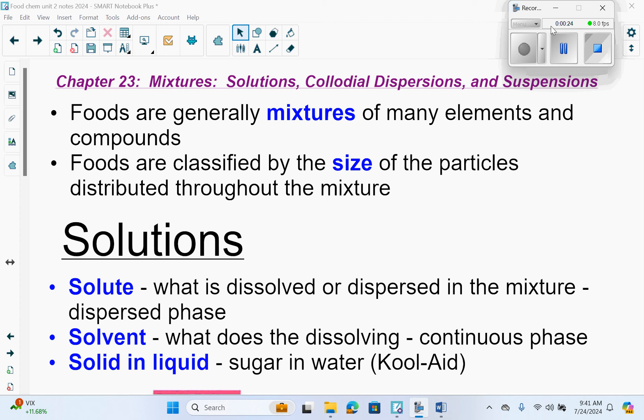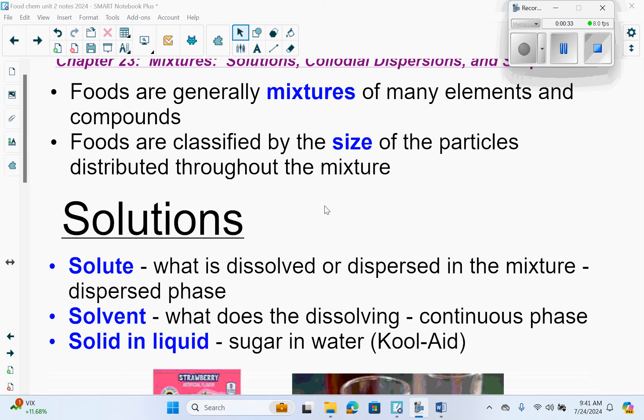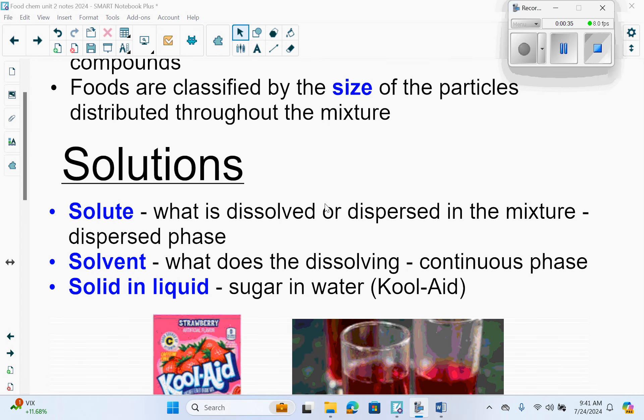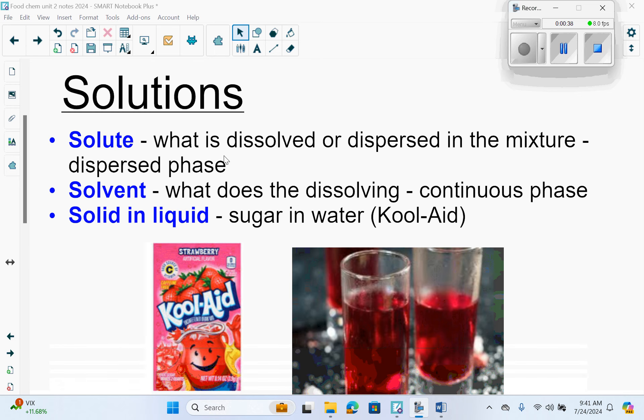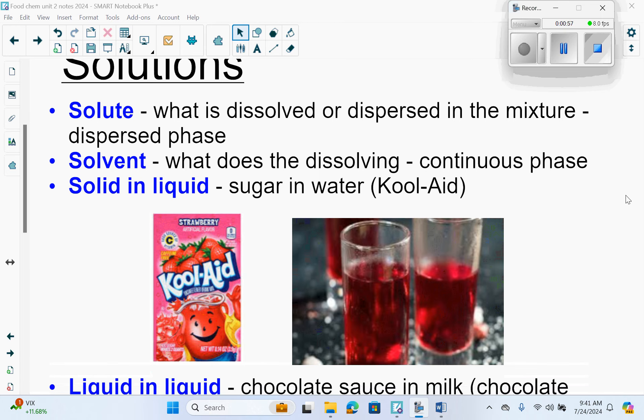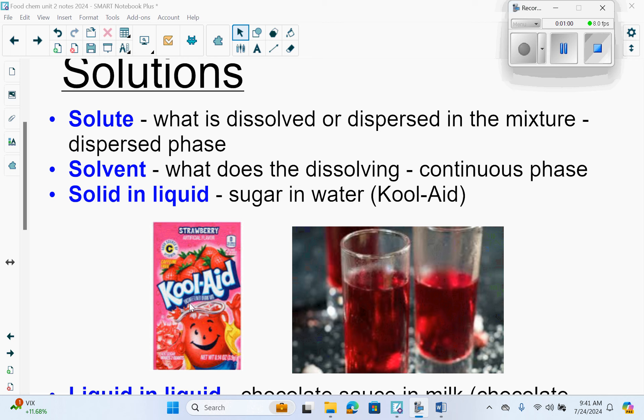Foods are generally mixtures of elements and compounds. Foods are classified by the size of particles distributed throughout the mixture. Solutions have two parts: the solute, which is what is dissolved or dispersed in the mixture (the dispersed phase), and the solvent, what does the dissolving (the continuous phase). A solid solute in a liquid would be sugar and water to make Kool-Aid. This packet gets dissolved in water, and there's your Kool-Aid solution.